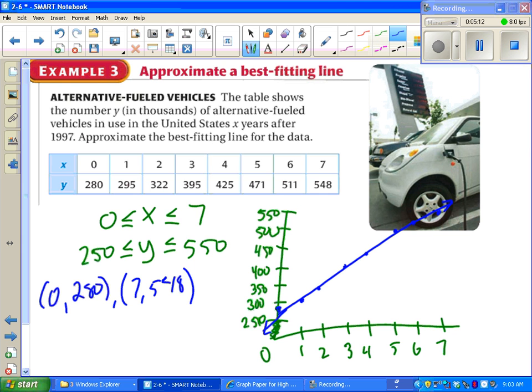I'll choose my (0,280) and my (7,548) to come up with my equation of a line. Going through the process for finding the equation of the line, I notice my slope is 38.3 about. And using that, my equation of a line would come out to be y = 38.3x + 280. And I'd be done. If you're not sure how to get the slope in that equation, go back and look at the lesson on how to find slope and how to find an equation of a line given a slope and a point.